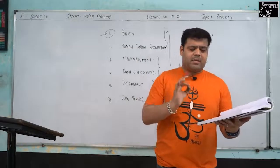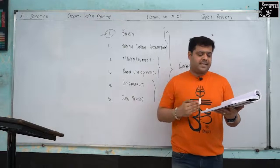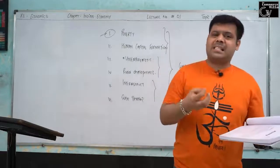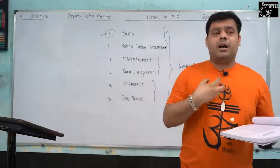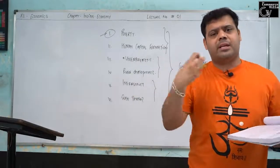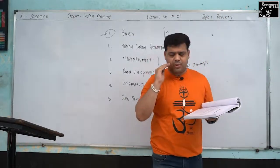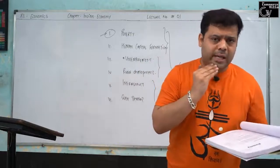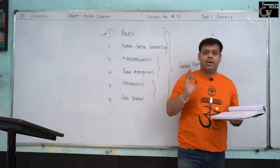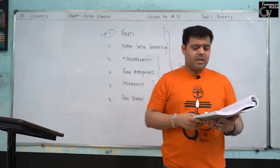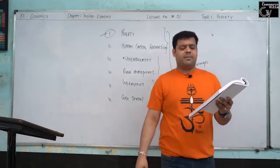If a person has basic food, basic clothes, basic house, basic education up to 5th class, and basic health such that he can take medicine — if all five parameters are successfully covered, he is not poor.